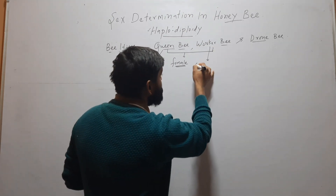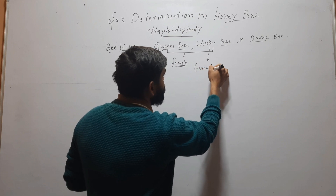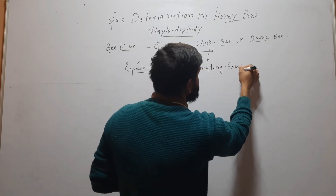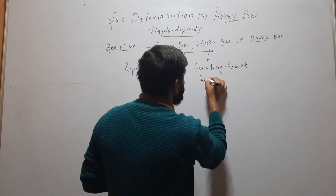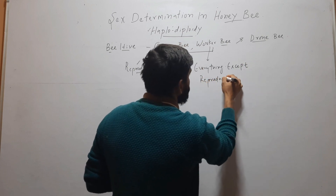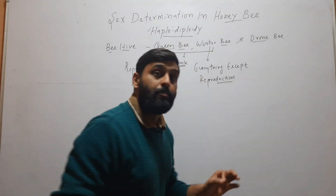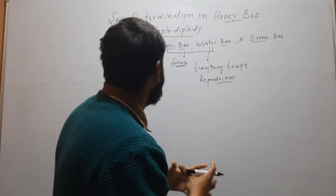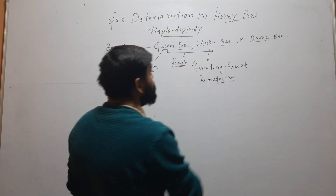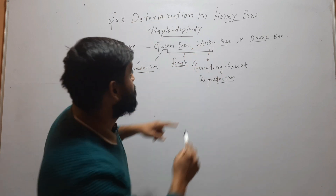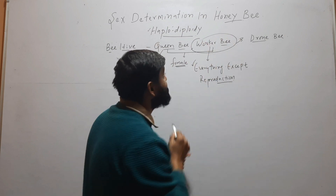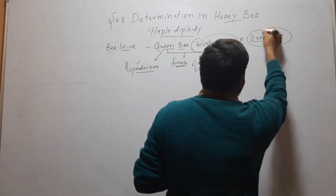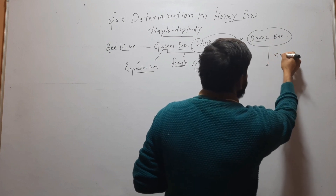The worker bee does everything except reproduction — that means protection of the hive, collection of pollen. All functions are performed by the worker bee. And the drone bee is male.